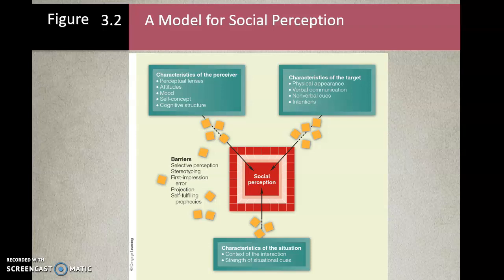The characteristics of the target include physical appearance, verbal communication, nonverbal cues, and their intentions. The person being perceived is judged by many things — the clothing they wear, and attractiveness also plays a role. Attitudes affect our social perception, and mood has a strong influence on how we perceive someone — we think differently when we're happy versus when we're depressed. The characteristics of the perceiver and the characteristics of the target collapse down into that social perception.